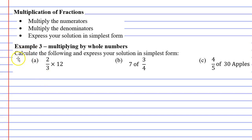In this video we're going to complete example 3. This time we're multiplying a fraction by a whole number. Now it's not much different to multiplying fractions by fractions. All we do is we take the first fraction, in this case two-thirds.